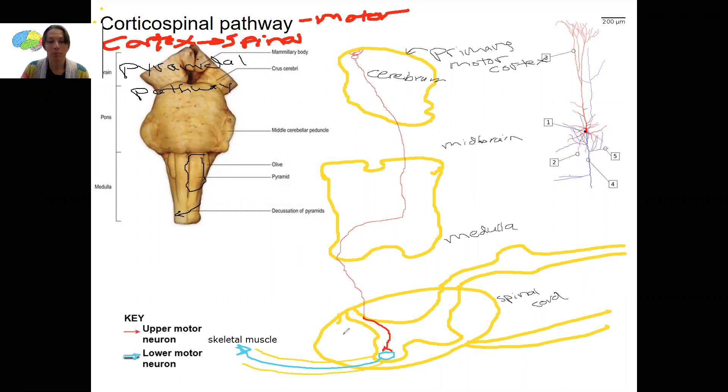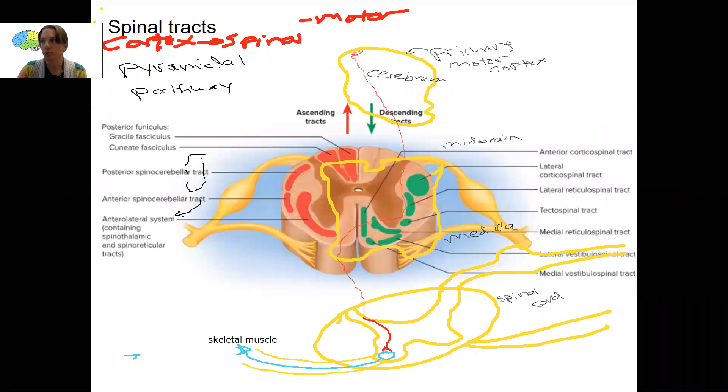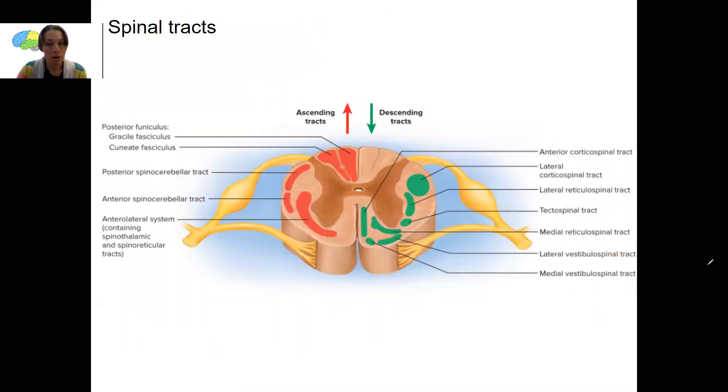So here you go. This is the corticospinal pathway, also called the pyramidal pathway. Two more things to show you. One first is this picture here. If you remember, you saw this last week with spinal cord. The spinal cord itself has these ascending and descending tracks.